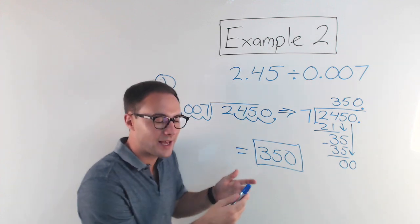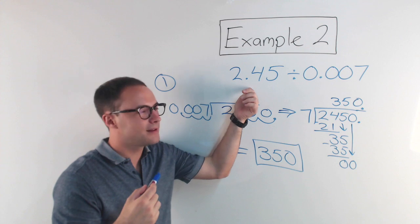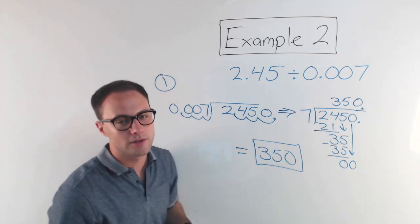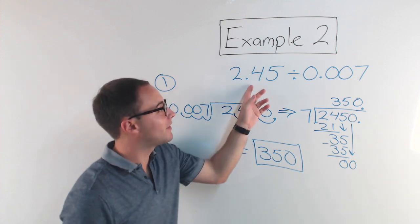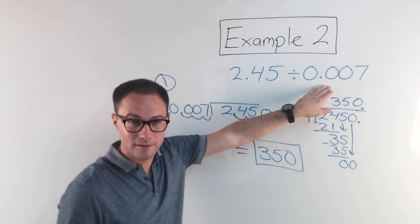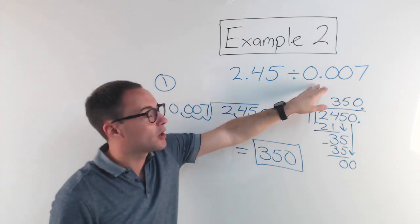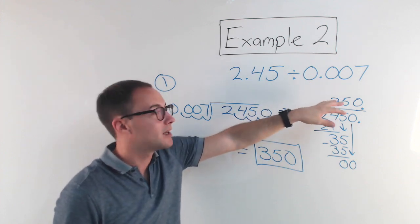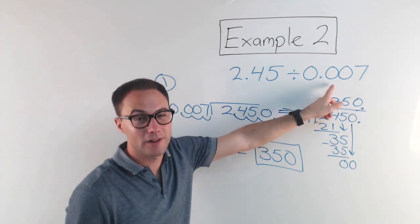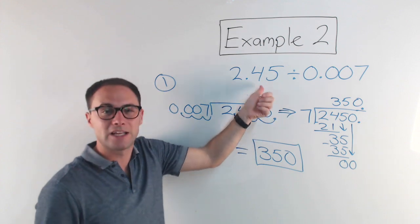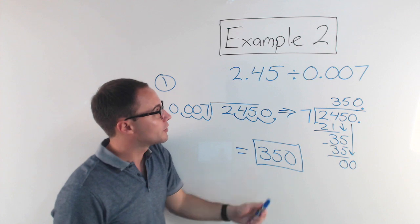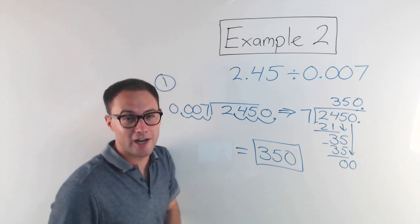You might wonder: how did the answer increase so much? We're dividing, right? It's very similar to dividing by fractions. You're essentially dividing by a fraction that's less than 1 — a proper fraction. And we know when we divide by a proper fraction, we're actually increasing the value. So that's what's happening here: this decimal is less than 1, so it actually increases the value — and quite a bit. So the answer is 350. Here's some more to try on your own.